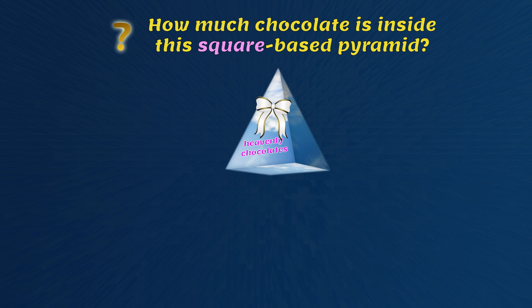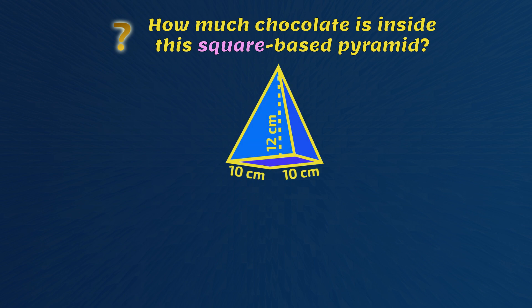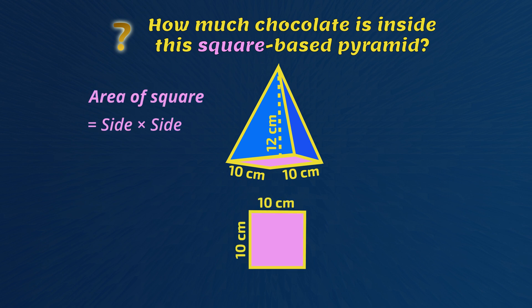How much chocolate is inside this square-based pyramid packet? We do two steps. First we work out the area of the base of the pyramid. In this shape, that base is a square. So the area of this square equals side multiplied by side. That's 10 multiplied by 10, which is 100 square centimeters.